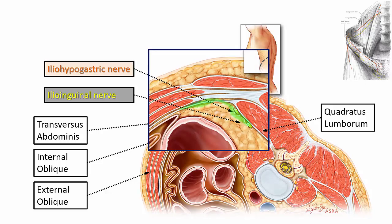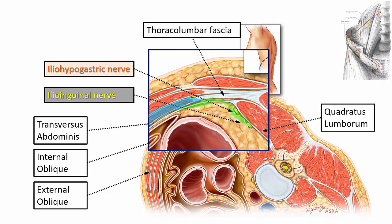This plane is the target for local anesthetic spread. Transversus abdominis and internal oblique taper off posteriorly into a common aponeurosis, also called the thoracolumbar fascia, where they meet the lateral border of quadratus lumborum. The tapered end of transversus abdominis forms an important landmark for performing the block. Note that extraperitoneal fat and not the peritoneal cavity usually lies deep to the end of transversus abdominis, minimizing any concerns about visceral perforation.